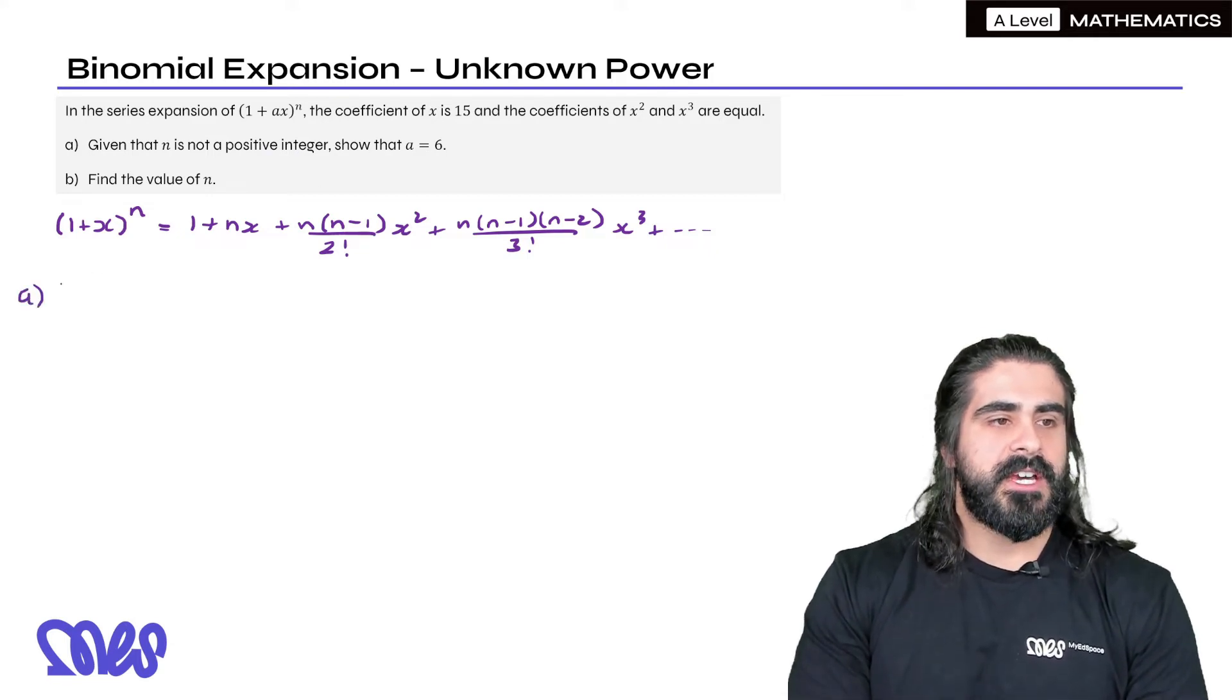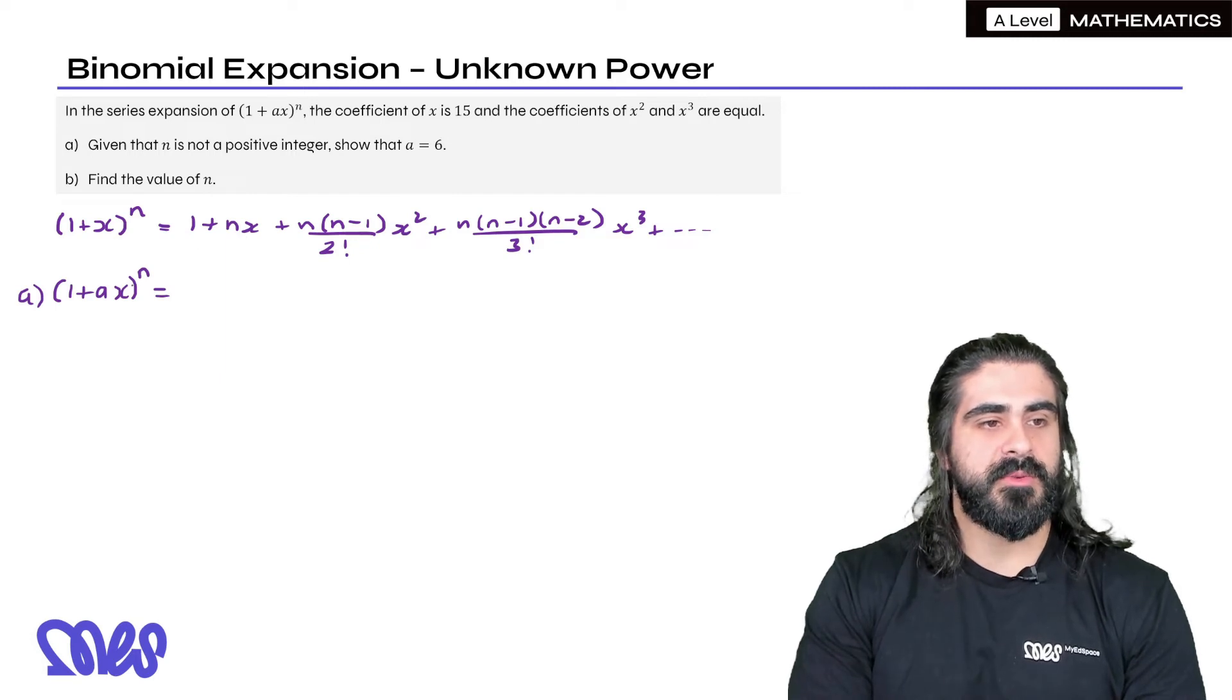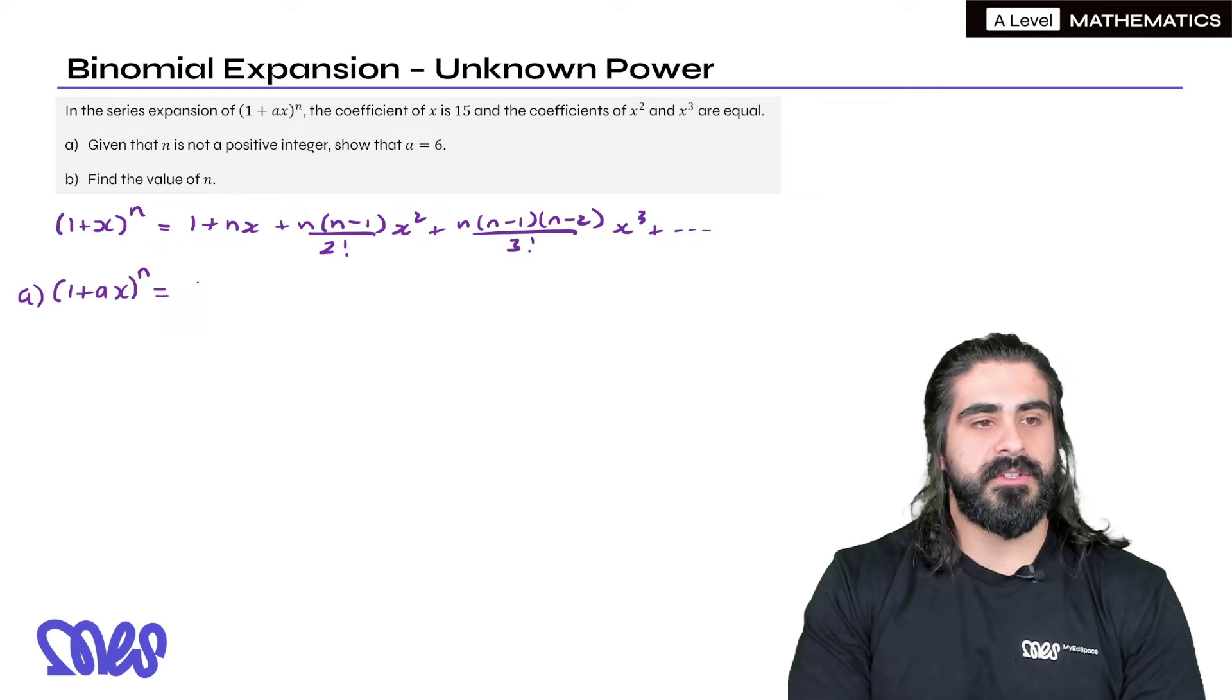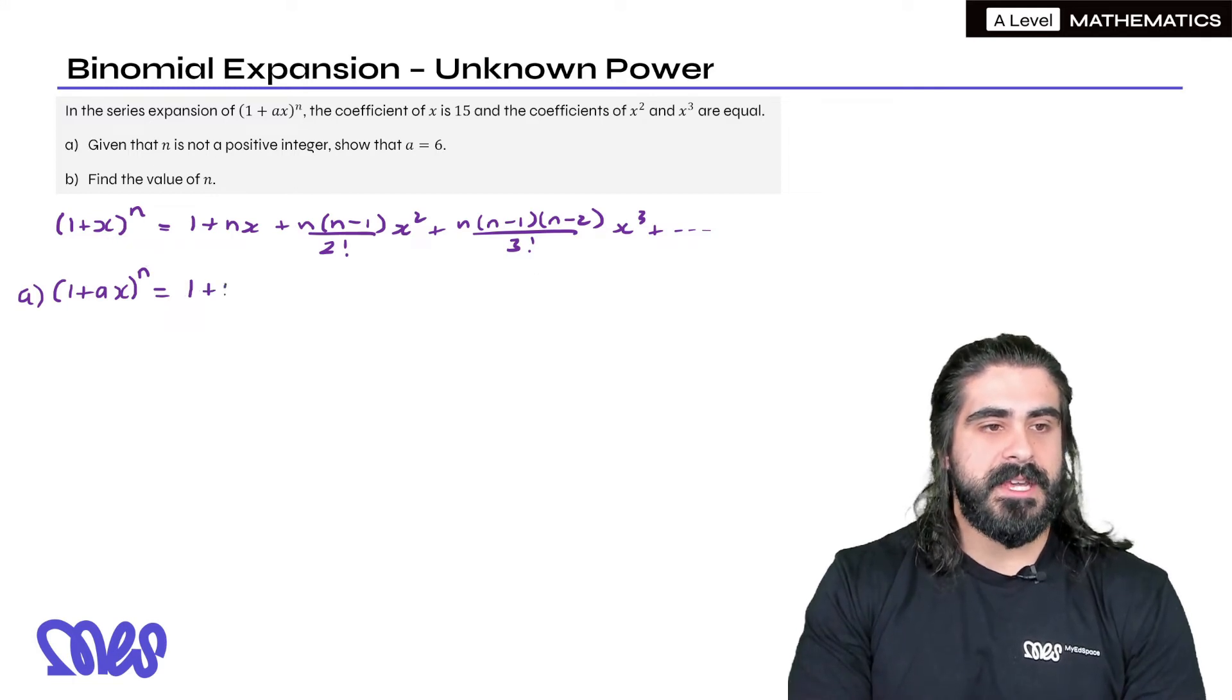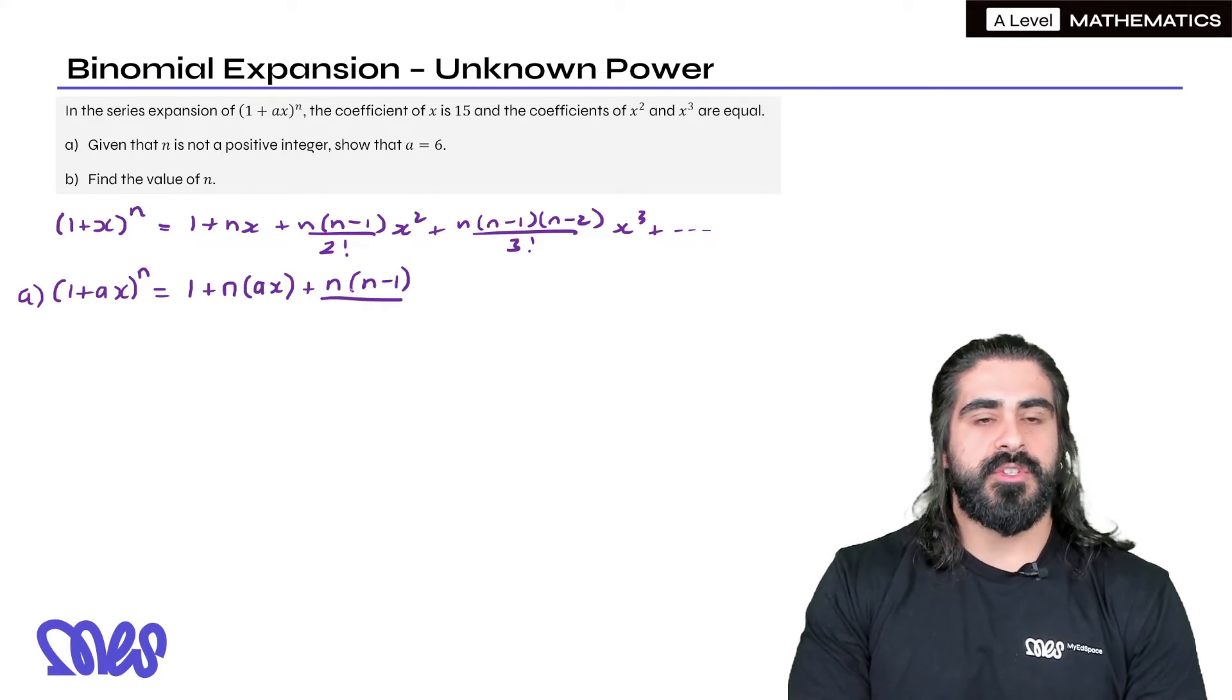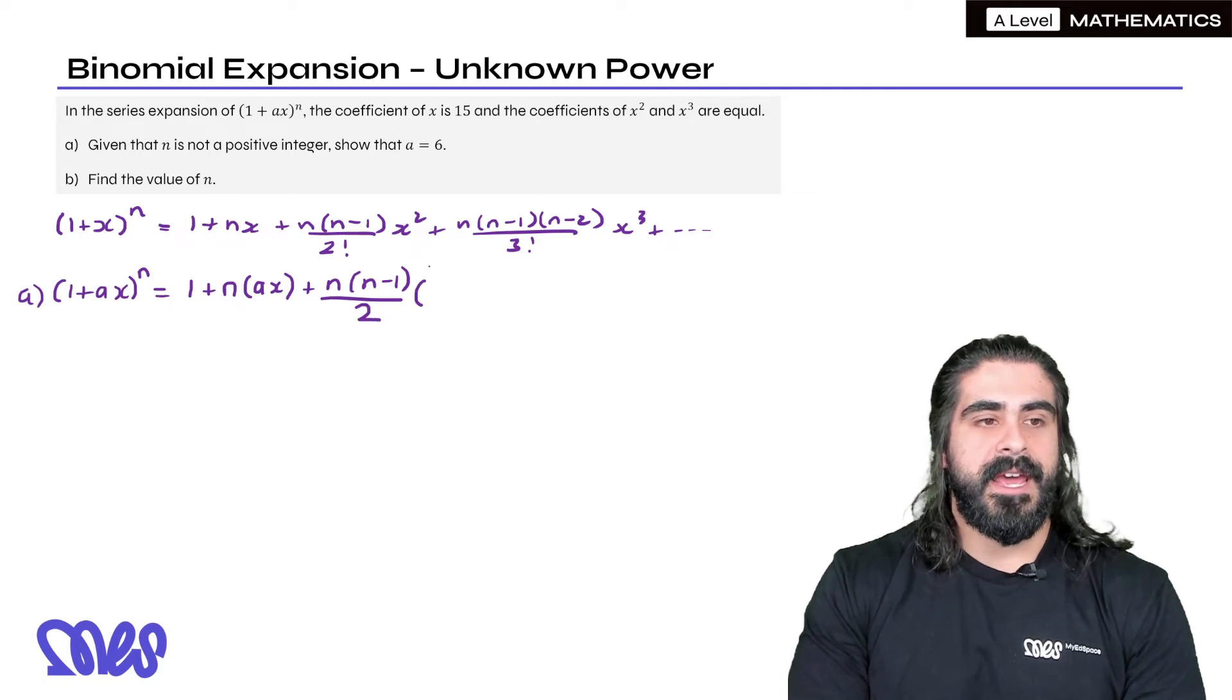So we are looking at the expansion for (1 plus ax) to the power of n. So how does that change? Well, wherever you see x, we're going to replace it with ax, just like when we did it with the choose method. So it'll be 1. Now n is the power, so it'll be n. x is now changing to ax and then we have n(n minus 1), 2 factorial, remember 2 factorial just means 2 times 1, I'm just going to say 2, x squared, but it's ax squared.